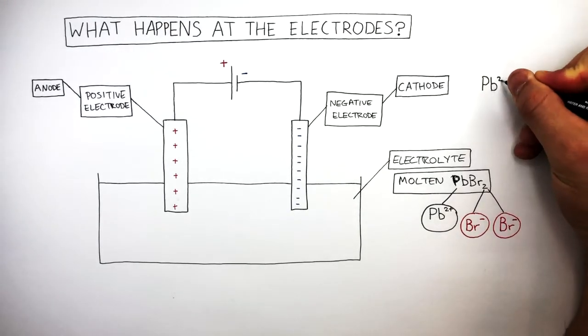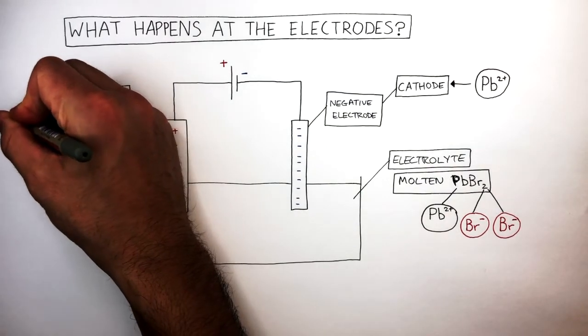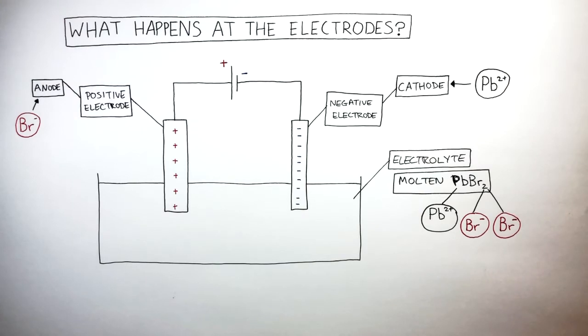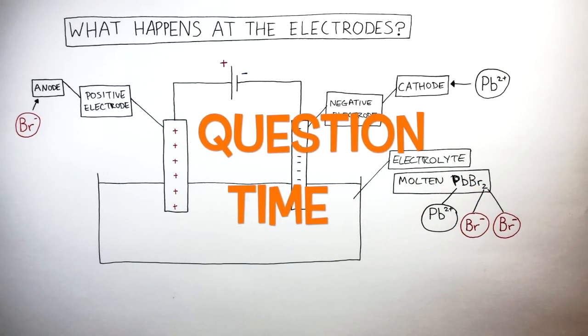The lead cations will be attracted to the cathode and the bromide anions will be attracted to the anode as opposites attract. The same charges repel. It's question time. Attempt these questions to check your understanding.